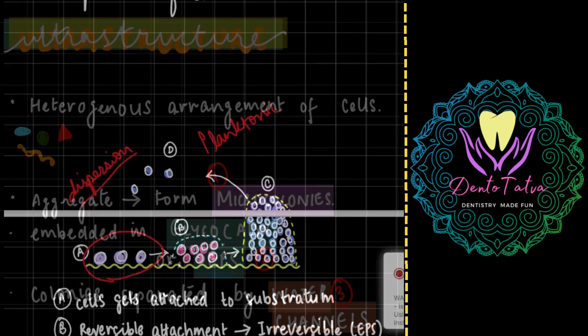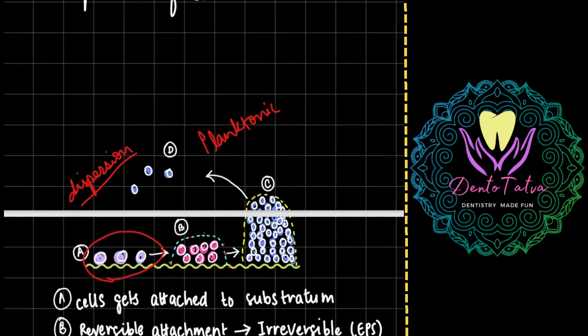Dispersion of single cells will result in the formation of these planktonic cells. Planktonic cells are your free-floating cells. These free-floating cells will then again start from ground zero and this cycle will keep on going.